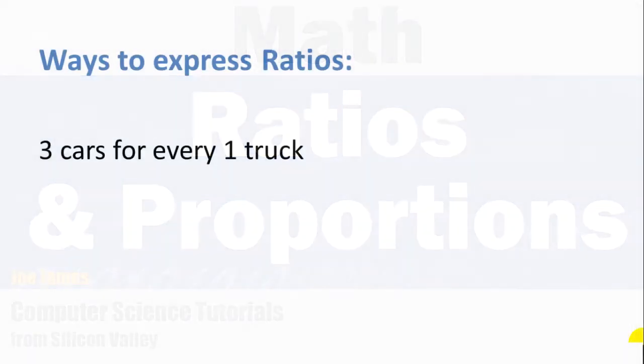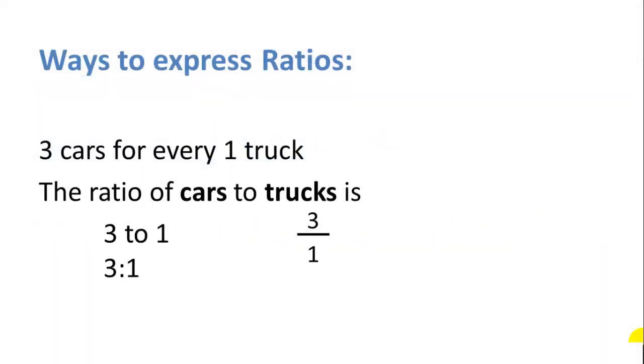So if there are three cars for every one truck, we could express a ratio like this. The ratio of cars to trucks is 3 to 1, or we could say 3 colon 1, or 3 over 1, similar to a fraction. In all three of these cases, the first number is cars, and the second number represents trucks, the 1.